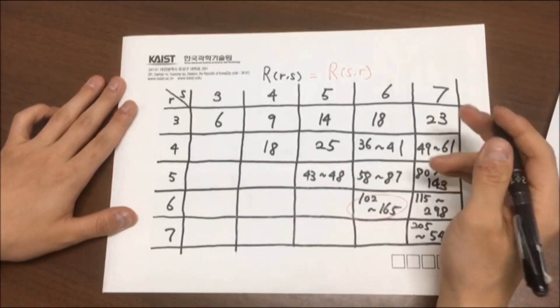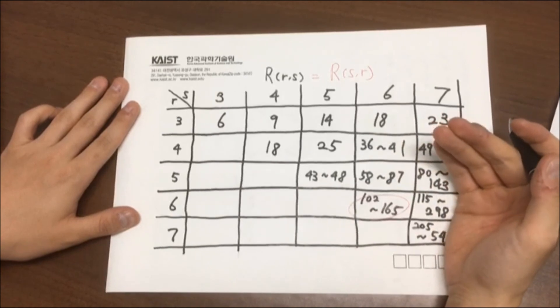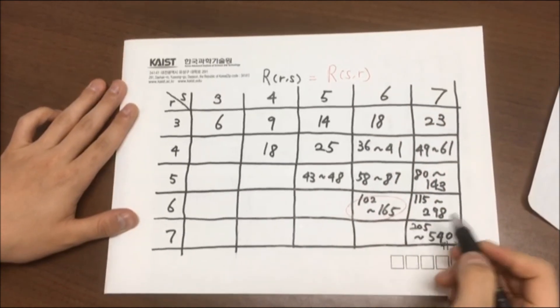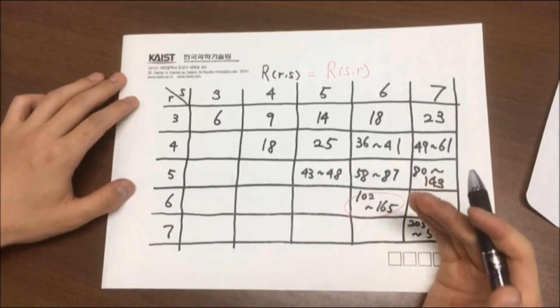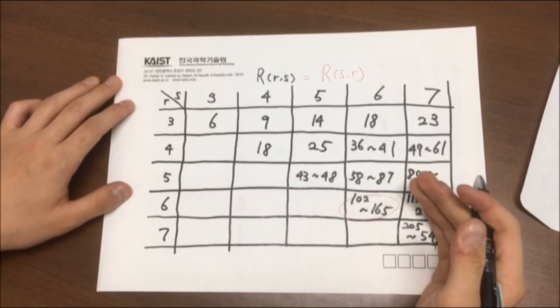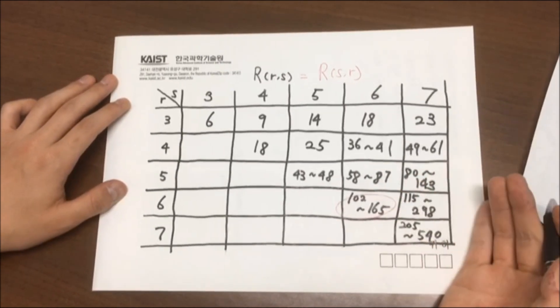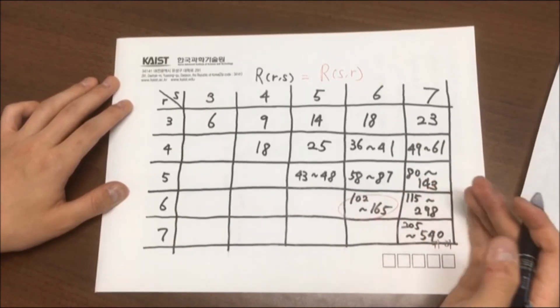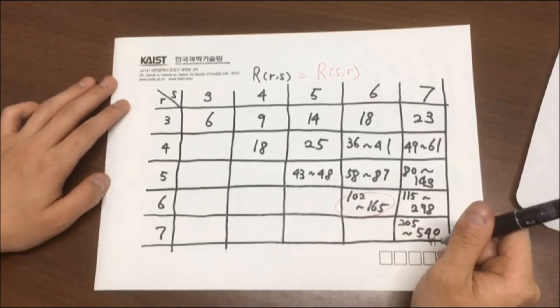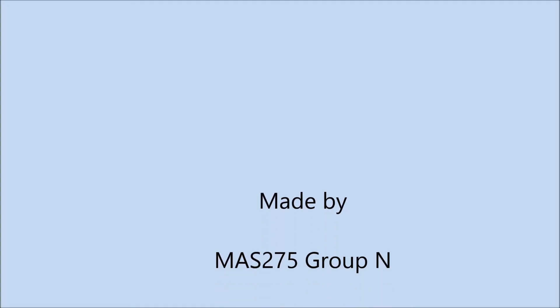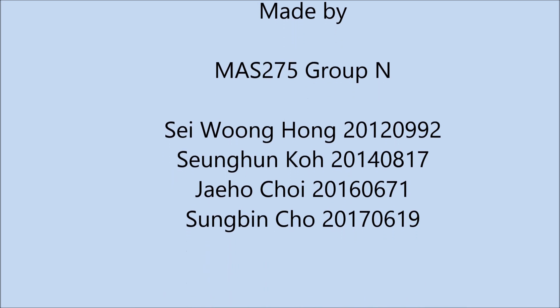As I said, if you could compute one of these unknown Ramsey's numbers, or at least find narrower bounds for them, it could be a dramatic breakthrough from the current situation. Well, this is it for this video. And thank you guys for watching this. Thank you.